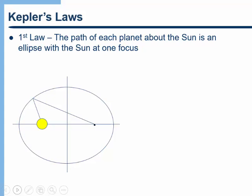Let's look at Kepler's first of his three laws. The first law states that the path of each planet about the Sun is an ellipse with the Sun at one of the two foci.